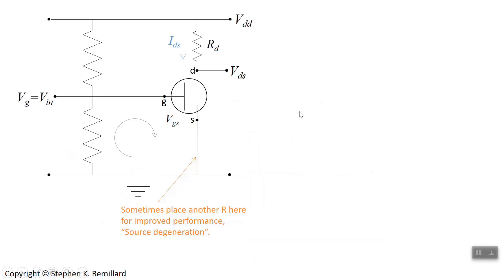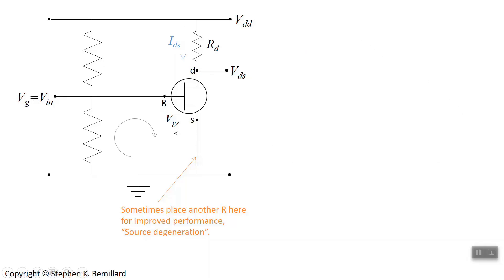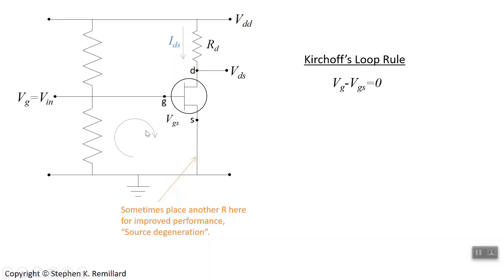We place the JFET in a common-source circuit where the source is grounded. Typically a little resistance is added to the source for source degeneration to improve performance. The key element is the drain resistor R_sub_D, which helps determine the gain of the amplifier. There's also a feedback resistor. The input voltage is applied to the gate — V_sub_G — which is different from V_gate-source, the potential difference between gate and source. Kirchhoff's voltage rule applied to the loop gives V_gate minus V_gate-source equals zero, so they are equal.